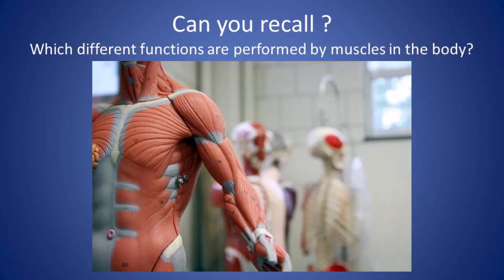The third question is: which different functions are performed by muscles in the body? There are three types of muscles. Voluntary muscles bring about movements that we do by our will. Involuntary muscles bring about all vital activities of the body, and the visceral organs are under their control. Cardiac muscles control the movements of the heart.